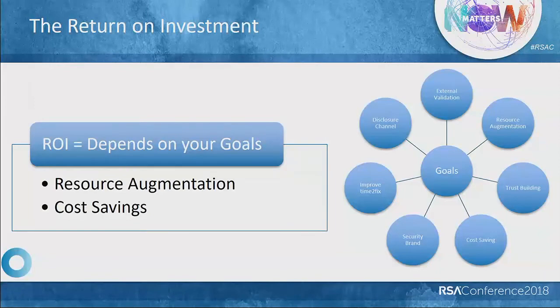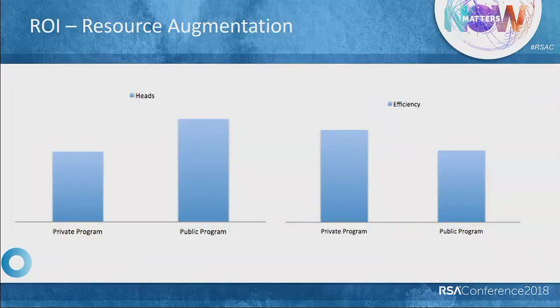Now we have thought about goals and implemented strategies to get a lot of submissions, but we can get a lot of submissions even if we invest in our internal teams. So what exactly is the return on investment of a bug bounty program? A lot of the ROI for most goals is going to be achieved just by having a bug bounty program in place, but a few — such as resource augmentation or cost savings — would need further analysis. Security teams usually have finite budgets, so it is important to think about ROI to make the right investment decision.